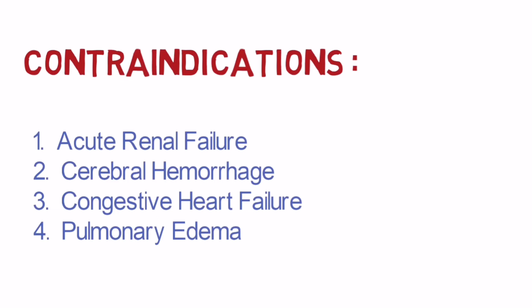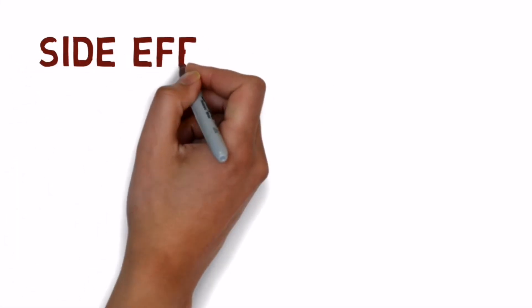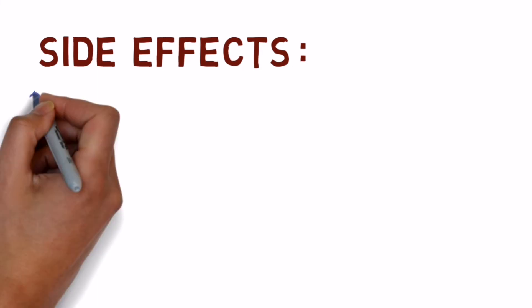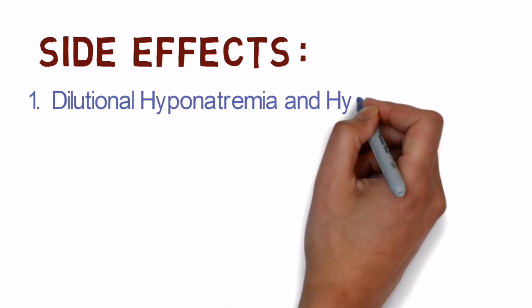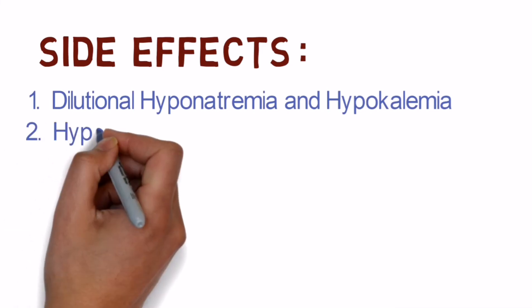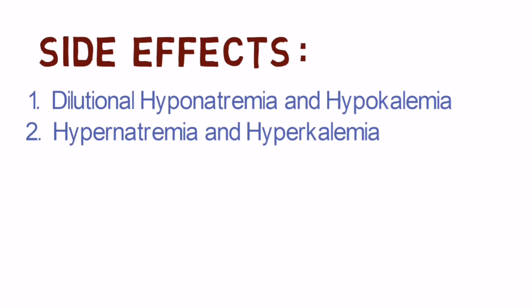Mannitol is contraindicated in CHF and pulmonary edema, which is usually associated with CHF, because it increases blood volume and increases preload. It is important to note that it is used in cerebral edema but not in pulmonary edema. Regarding side effects: in the first phase it increases intravascular free water content and therefore decreases electrolyte concentration, causing dilutional hyponatremia and hypokalemia. In the second phase, excess water diuresis compared to natriuresis or kaliuresis results in hypernatremia and hypokalemia.